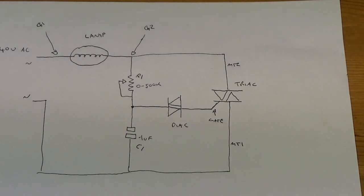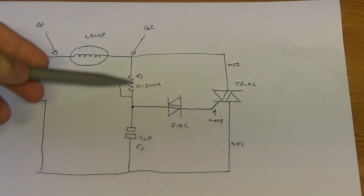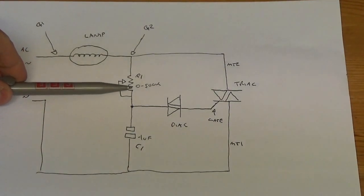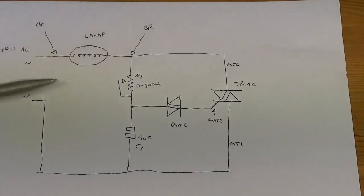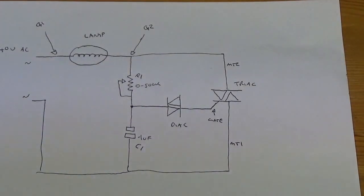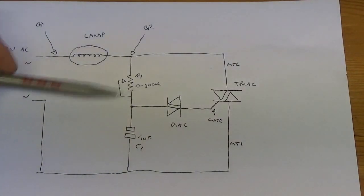This part of the circuit is an RC network, and basically it works on an RC time constant. The higher the resistance is here, the more time it takes for C1 to charge to a required voltage. The lesser the resistance, obviously the voltage will be reached quicker.